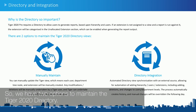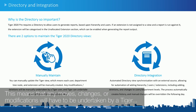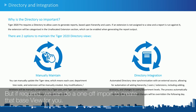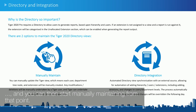We have two options to maintain the Tiger 2020 directory. We can manually maintain the directory, which means that any moves, changes, or modifications will have to be undertaken by a Tiger user, assuming you have the rights to do so. If required, we can do a one-off import to create that base view for you. So if you have a CSV file that contains the information, we could do a one-off import and you can then start manually maintaining from that point. The other option is directory integration.